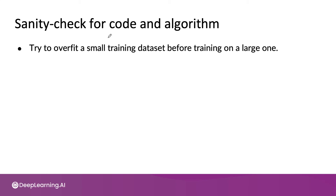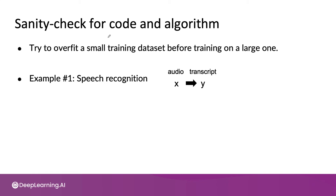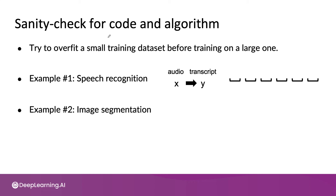Maybe even try to make sure you can fit one training example, especially if the output is a complex output. For example, I was once working on a speech recognition system where the goal was to input audio and have a learning algorithm output a transcript. When I trained my algorithm on just one audio clip, my speech recognition system output space, space, space, space, space, space — so clearly it wasn't working. Because my speech system couldn't even accurately transcribe one training example, there wasn't much point to spending hours and hours training on a giant training set.